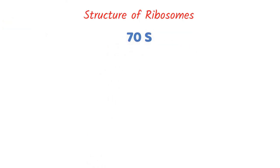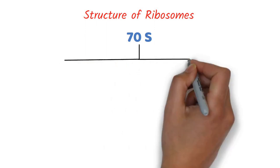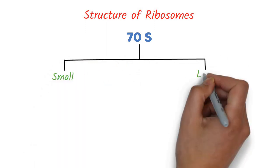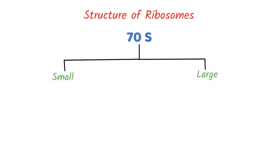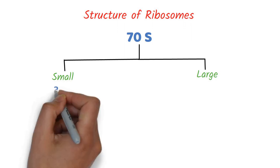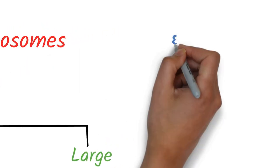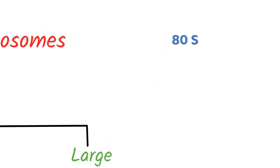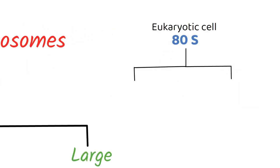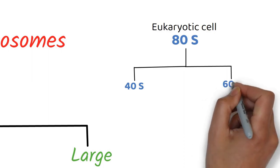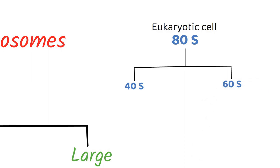The 70S ribosome is made of two subunits: a small subunit of 30S and a large subunit of 50S. Similarly, the 80S ribosomes in eukaryotic cells consist of a 40S and a 60S subunit. However, we are not discussing those here.